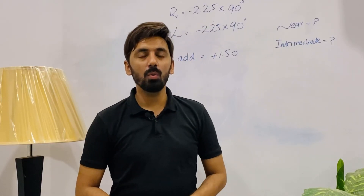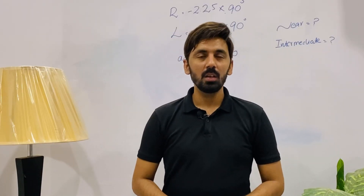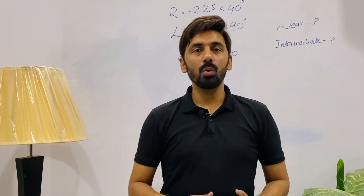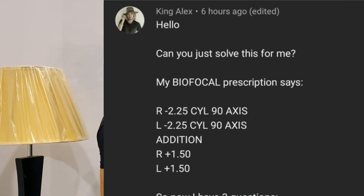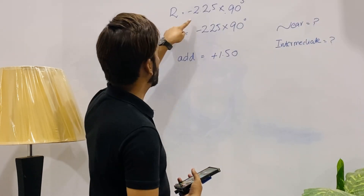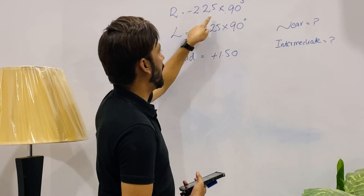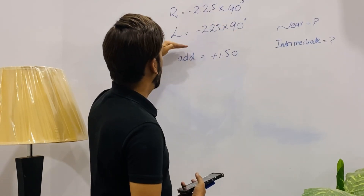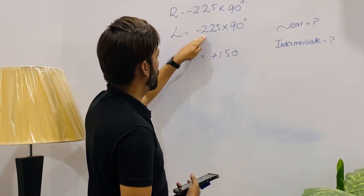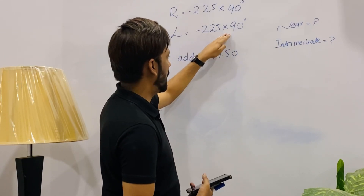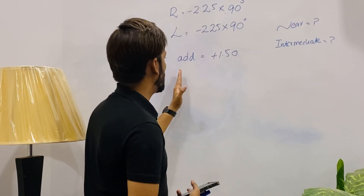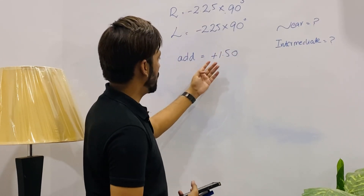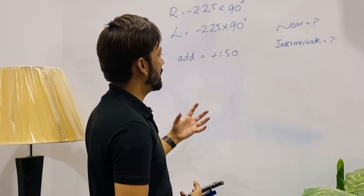Hello, this is Khuram Nasir and you're watching Optometry with Khuram. Today's video is a question and answer session. Today's questions are from Mr. King Alex, and his concern is with his prescription. His distance prescription is: right eye minus 2.25 cylinder at 90 degrees, and left eye the same — minus 2.25 cylinder at 90 degrees. His addition is plus 1.5 in both eyes.